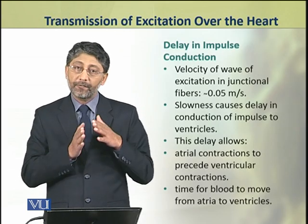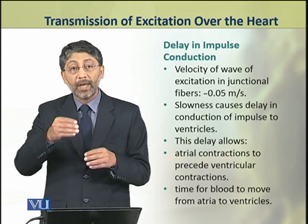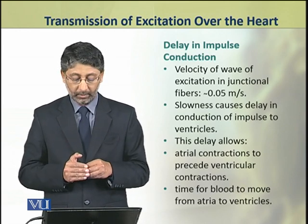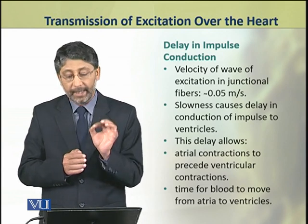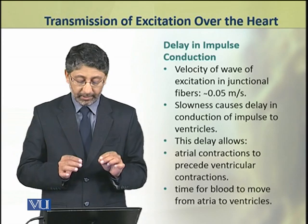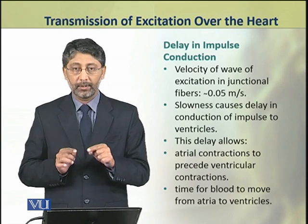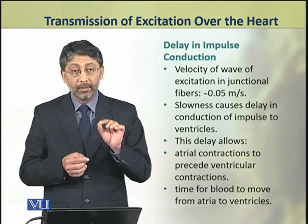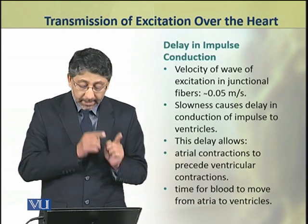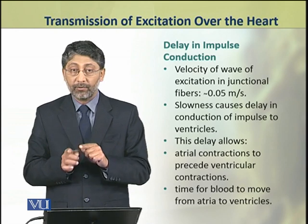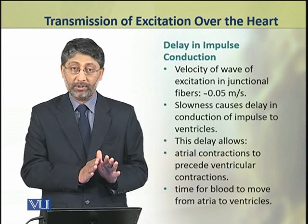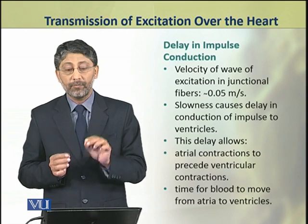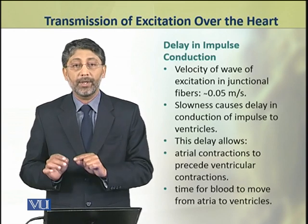The velocity of the wave of excitation in junctional fibers is very low, about 0.05 meter per second. This slowness causes a delay in the conduction of impulse to the ventricles. This delay is very significant because it allows atrial contractions to precede ventricular contraction, and it allows time for blood to move from the atria into the ventricles.